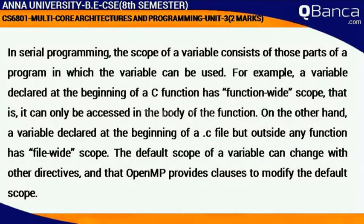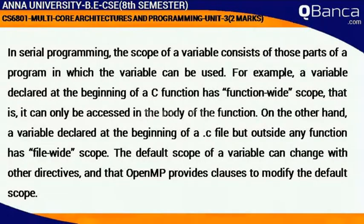That is, it can only be accessed in the body of the function. On the other hand, a variable declared at the beginning of a .C file but outside any function has file-wide scope. The default scope of a variable can change with other directives, and OpenMP provides clauses to modify the default scope.